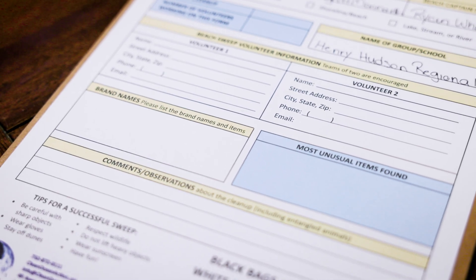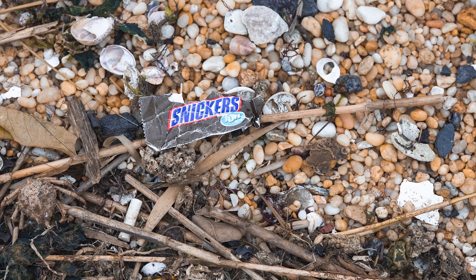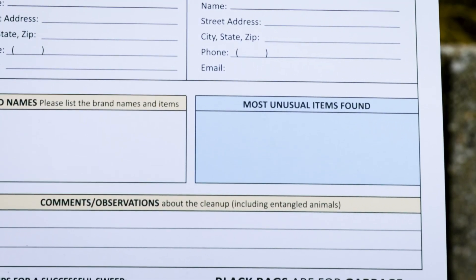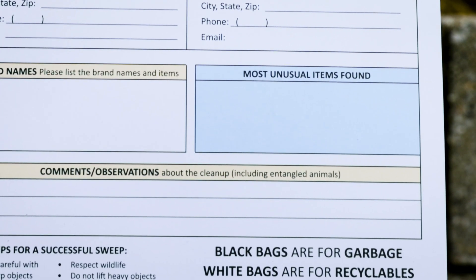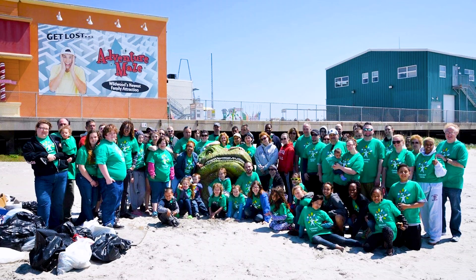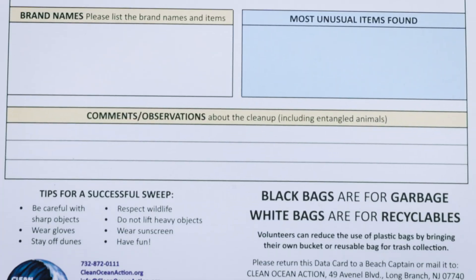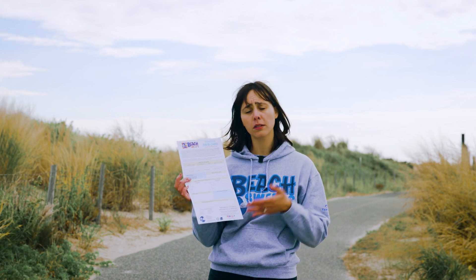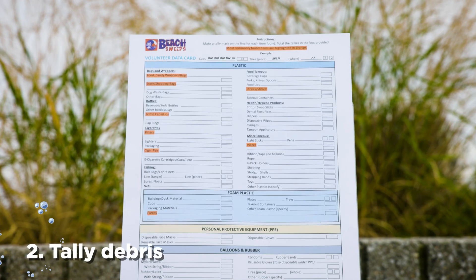There are special sections on the data card for filling out brand names — things you find a lot of while out on the beach — so we know what brands to track. There's also a section for most unusual items; every year we publish a 'roster of the ridiculous' where those items get compiled. Lastly, there's a section for additional comments and observations, such as entangled animals, dead animals, or anything else worth noting.